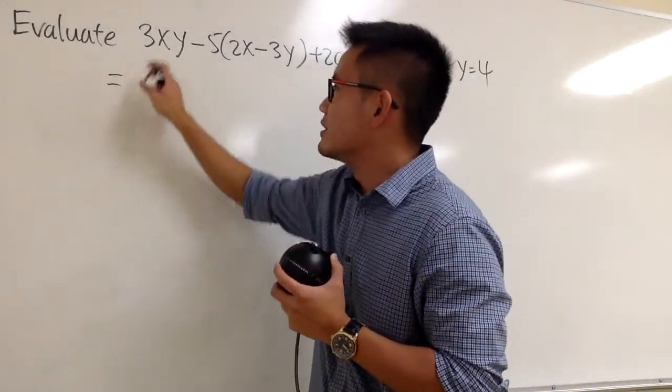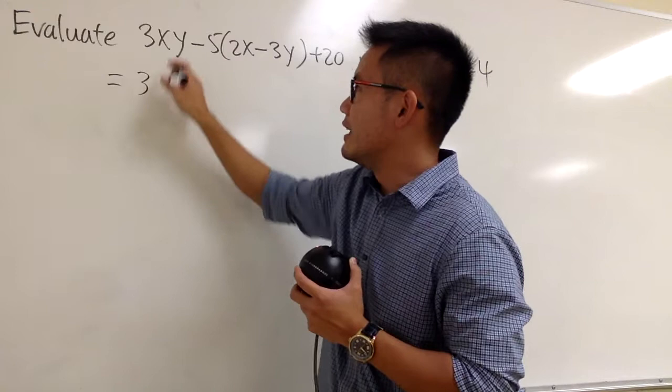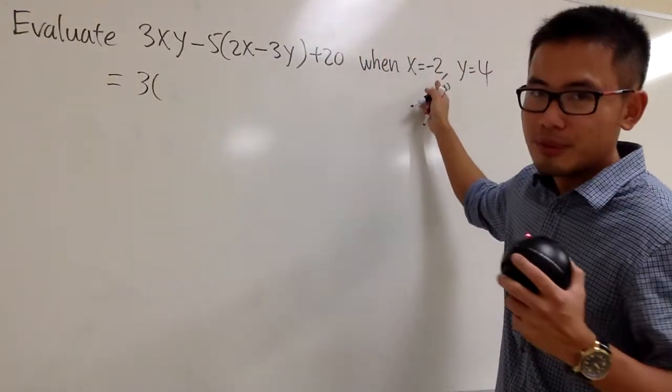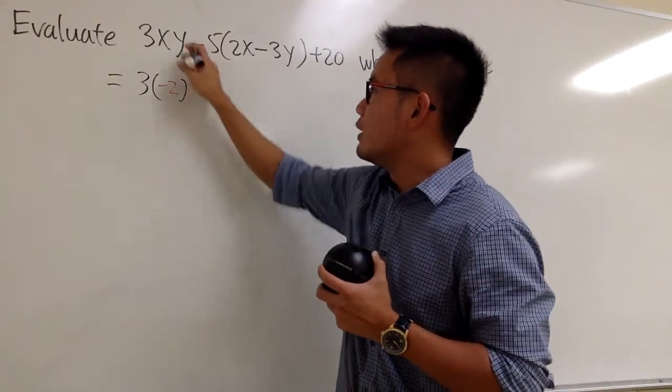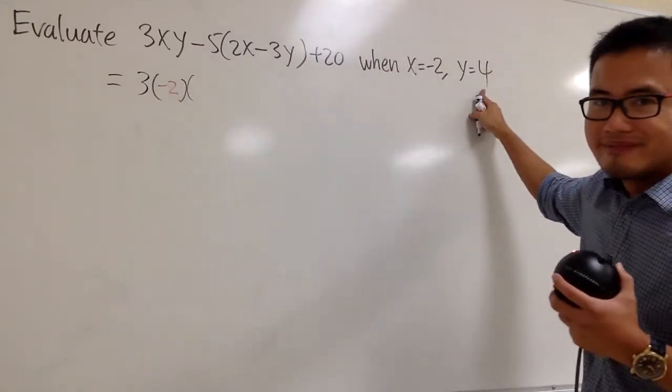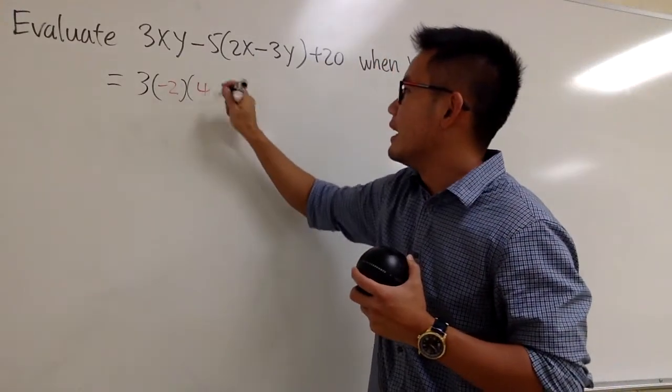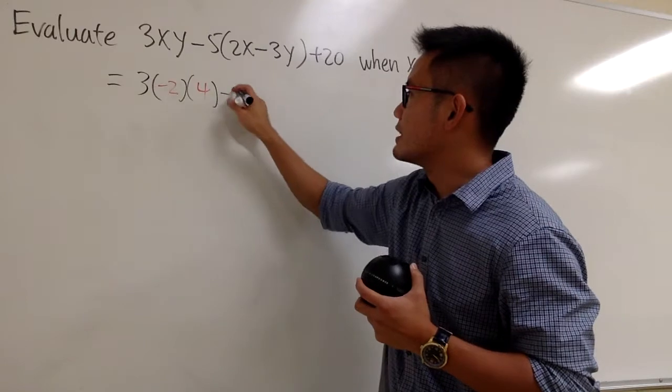So let's see, this is going to be straight from here, and then the x is negative 2, right? So we put down negative 2 right here, and the y is what? 4. So we put down 4 right here. And then continue, we have the minus 5.